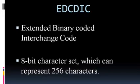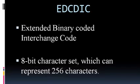Now I want to speak about EBCDIC. Its full form is Extended Binary Coded Decimal Interchange Code. It is an 8-bit character set, whereas ASCII is a 7-bit character set. EBCDIC is an 8-bit character set which can represent 256 characters. So the difference between ASCII and EBCDIC is that ASCII has a total of 128 characters, while EBCDIC has a total of 256 characters and is an 8-bit character set.